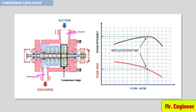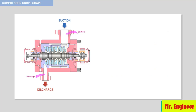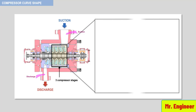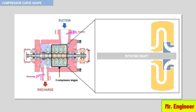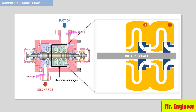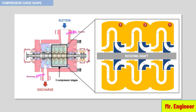We have seen the gas path inside the upper half of the first compressor stage. Let's now see the gas path inside the entire three consecutive first stages of this compressor. Here you have the first stage, the second stage, and the third stage, and here you can see the gas path.